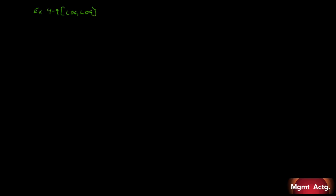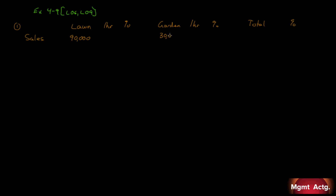The first required item is to compute the overall contribution margin ratio for the company. We'll replicate the table here — lawn maintenance recorded by hour and by percent, then garden by hour and by percent, with a total column. Sales: lawn is $90,000 and garden is $30,000, giving a total of $120,000, which is 100%.